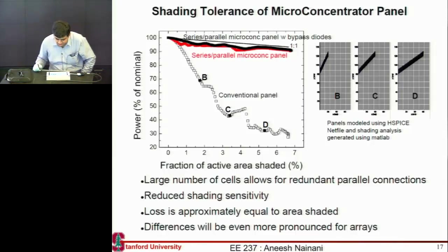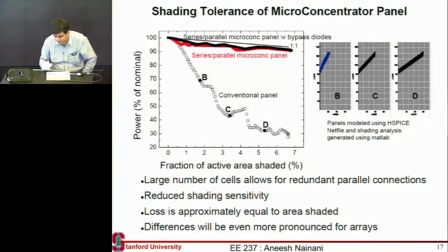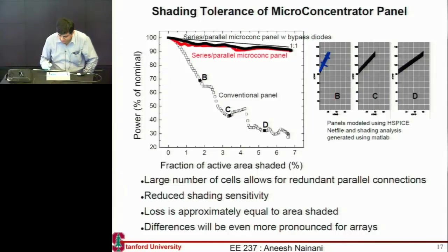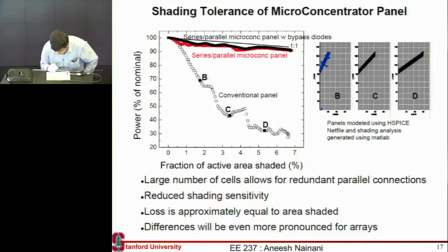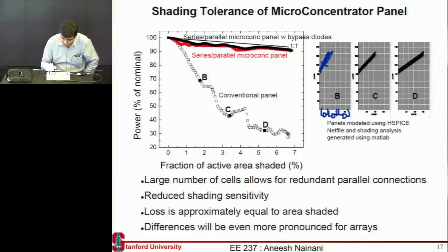Here are results from that simulation. The panel has six rows of cells. In case B, I've shaded a few cells across two of these rows. If all cells were connected in series, the whole panel would shut off, but thankfully we have bypass diodes — three bypass diodes, one between each pair of rows. So when shading like this occurs, only one third of the panel turns off and efficiency drops to about 66%.